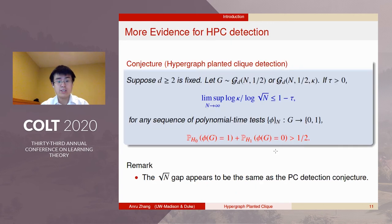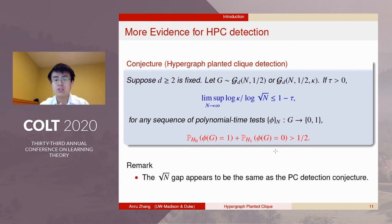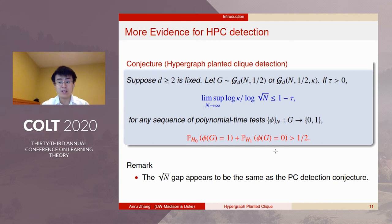Therefore, we would like to raise this conjecture: if the clique size κ is significantly smaller than √n, there will be no polynomial time test making both the type 1 and type 2 errors small.